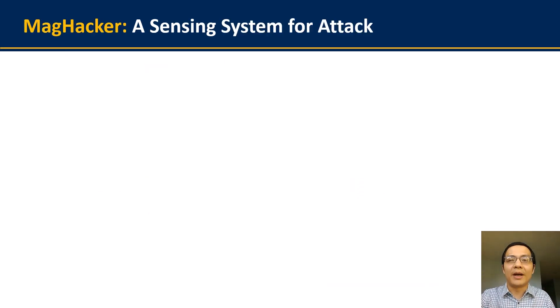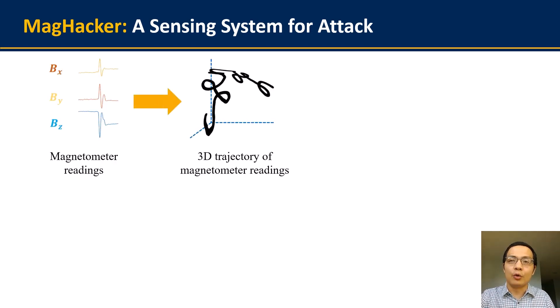So in this work, we developed the MagHacker, which is a new sensing system that realizes such eavesdropping attack on commodity mobile devices. And more specifically, we focus on recognizing the handwritten English letters and words. MagHacker takes the raw 3D readings from the magnetometer as an input, but as you can see here, the 3D trajectory of such magnetometer readings are usually highly distorted and hard to be directly recognized.